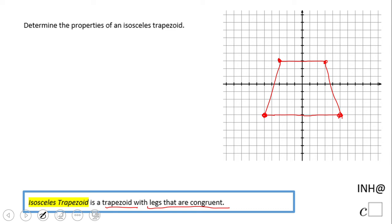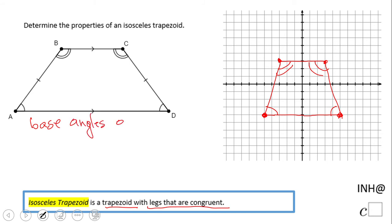What is cool about an isosceles trapezoid? These two angles are congruent. These are the base angles. That is one of the properties—the base angles are congruent.